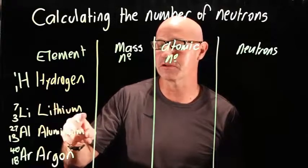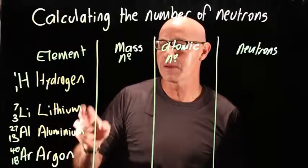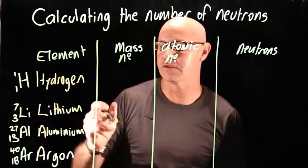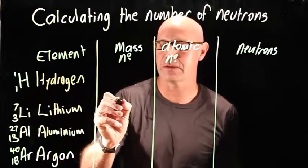Let's actually start with lithium, because it's probably a little bit easier. Remember, the mass number is the larger of the two numbers, so lithium has a mass number of 7.